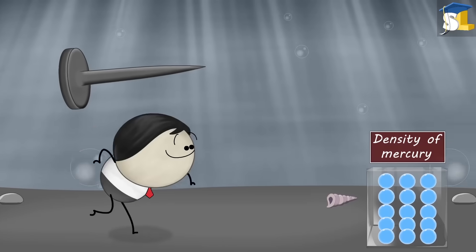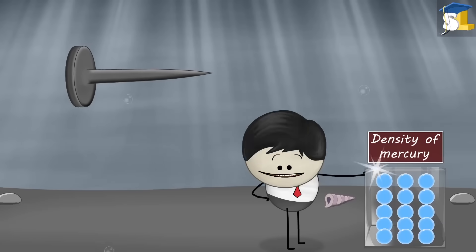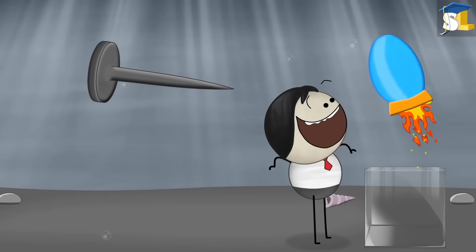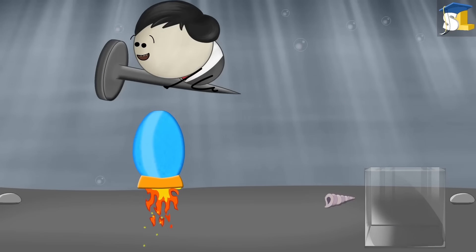However, in the second case, as the density of mercury is comparatively more than the iron nail, the upward force exerted by mercury is more. Hence, the nail floats on mercury.